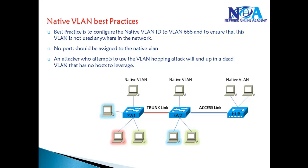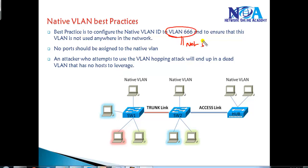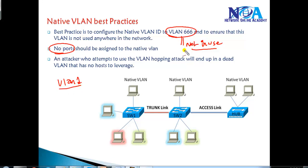The best practice for native VLAN is to create a VLAN that is not in use — it's recommended to change the native VLAN to 666 or 999, or any other VLAN which is not in use and has no ports associated with it. Using VLAN 1 as the native VLAN is not recommended because of a security threat called VLAN hopping attacks, where a user can try to gain access using native VLAN information.